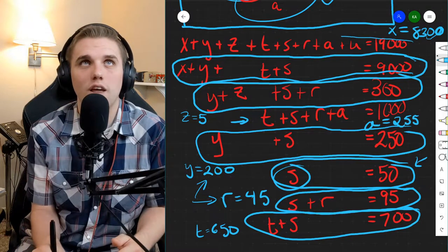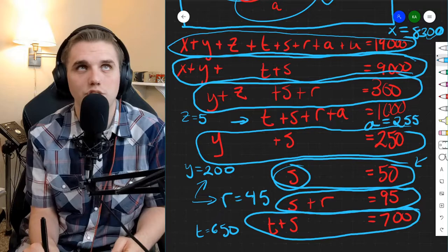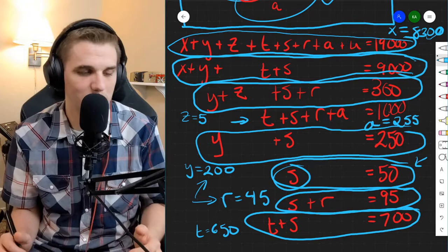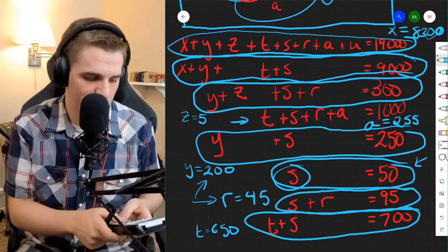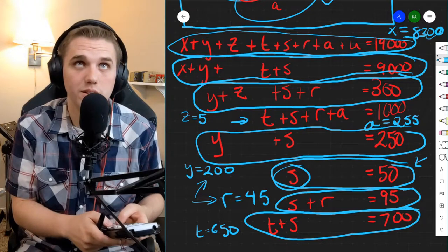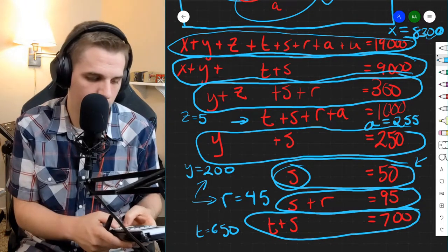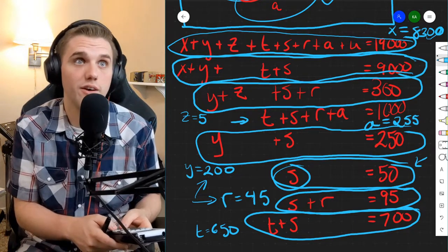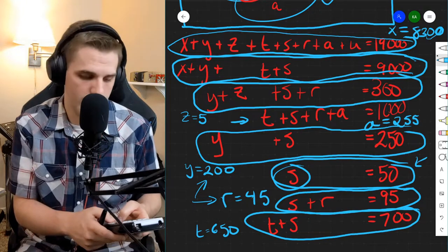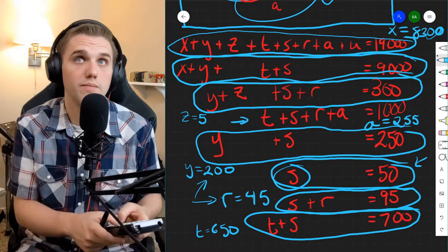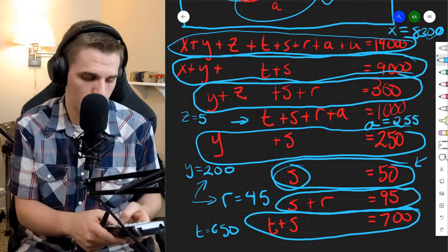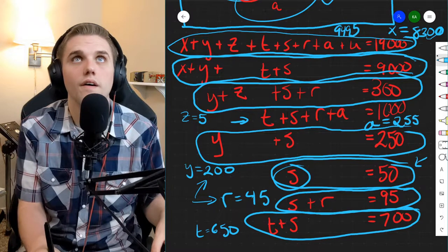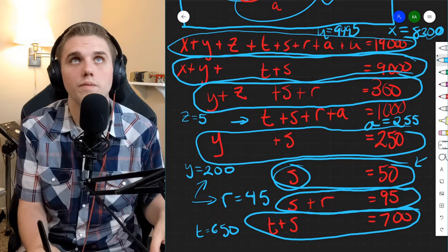And then now I can figure out what U is using this top equation here. Now that I know what all of those letters are except U. And so that is, I'm going to need a calculator for this one. So it's 19,000, but minus X is minus 8,300, and then minus Y, which is 200, minus Z, which is 5, minus T, which is 650, minus S, which is 50, minus R, which is 45, minus A, which is 255. And I'm left with 9,495 being in U.